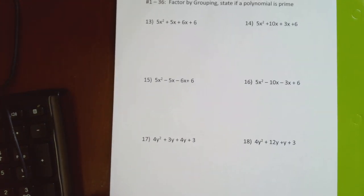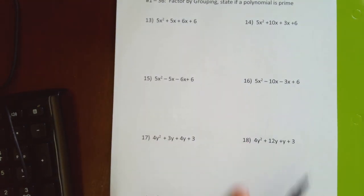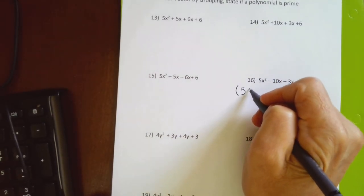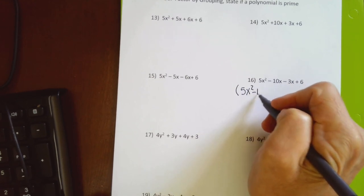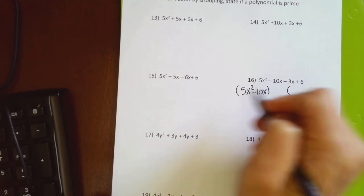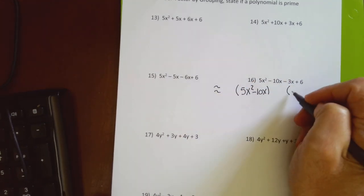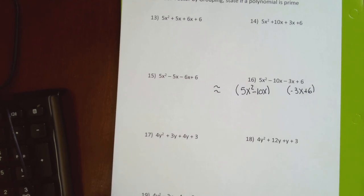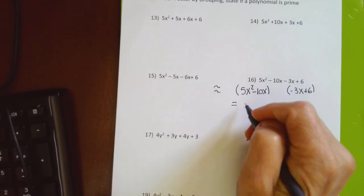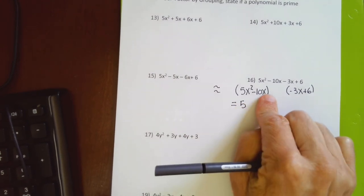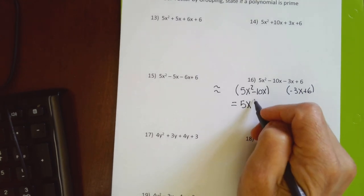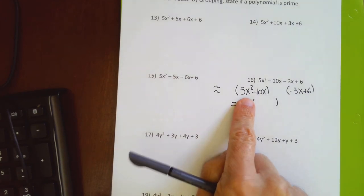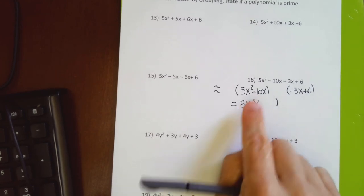For problem 16, I put 5x² − 10x in the first parenthesis. The common factor between 5 and 10 is 5, and between x² and x the smaller exponent is x, so the common factor is 5x. Dividing: 5 ÷ 5 = 1, I started with 2x and factored out 1x so I'm left with x, and 10 ÷ 5 = 2 after the minus sign.